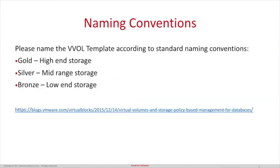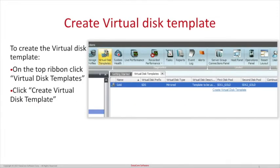Now that the users have been created properly, it is time to create the VVOL templates. It is suggested to name the templates Gold for high-end storage, Silver for mid-range, and Bronze for low-end storage, so it is easier to keep track between SAN Symphony and vSphere. To create a virtual disk template, click Virtual Disk Templates on the top left of the ribbon, then click Create Virtual Disk Template.